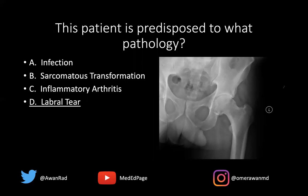On this frontal view of the left hip, notice there's no acute fracture, but we do have this finding here. There's an osseous protuberance at the femoral head and neck junction. Normally in a hip, you'll have a nice offset between the femoral head and neck — a nice concavity — but we've lost that with this bump here.